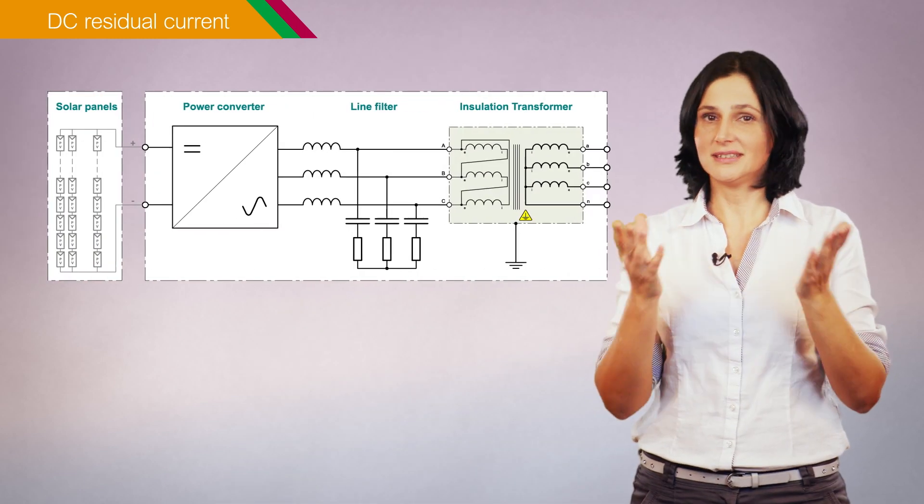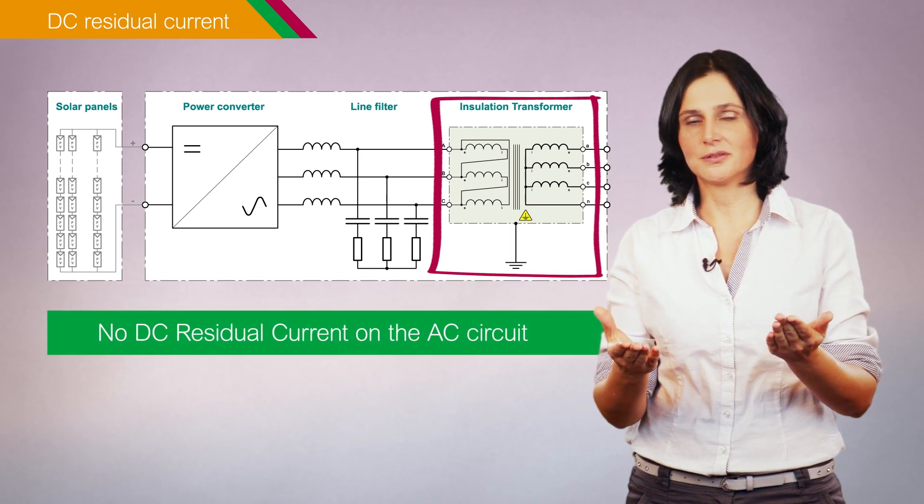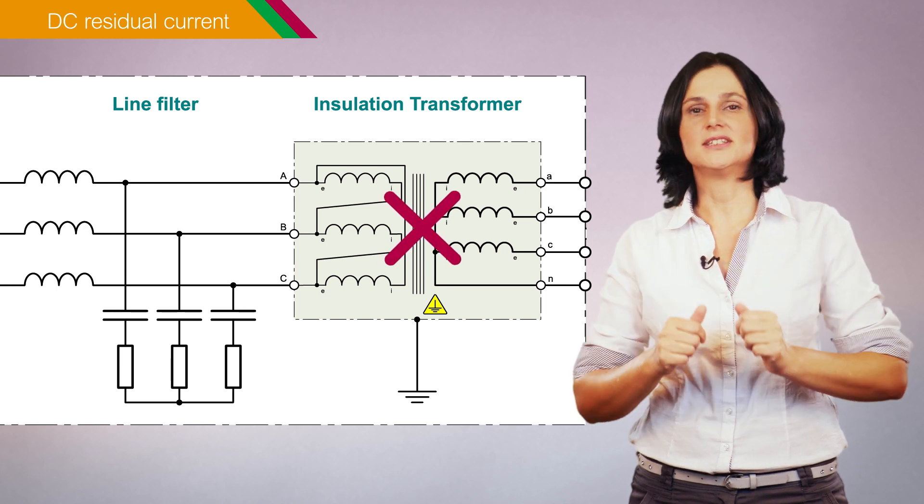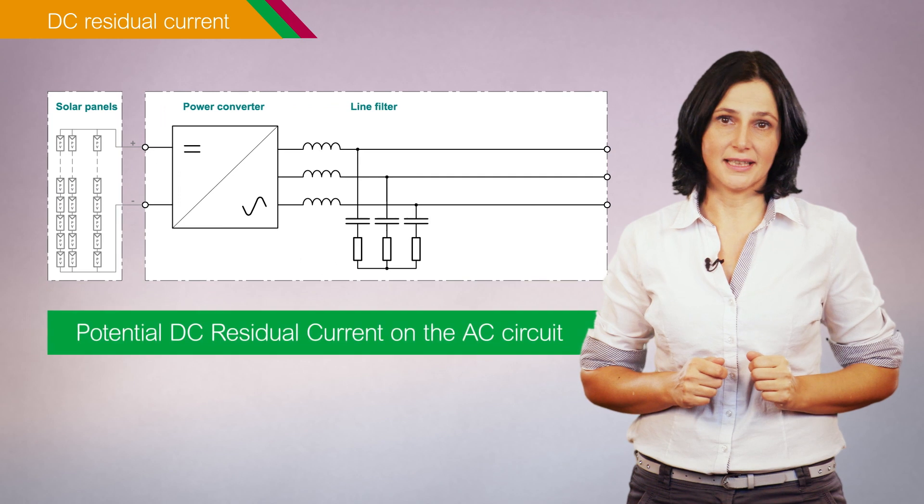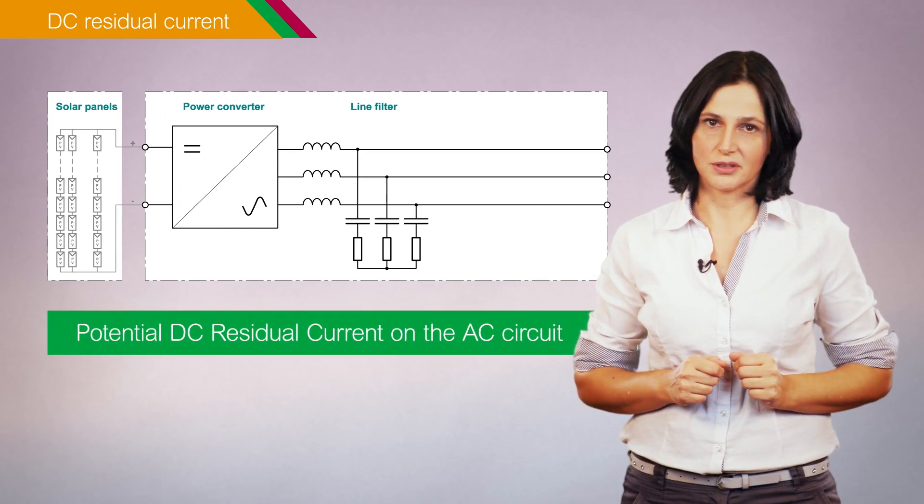Photovoltaic inverters may generate DC residual current in the AC circuit depending on their technology. There are two types of photovoltaic inverters: inverters with insulation transformer which cannot inject DC residual current on the AC side, and inverters without galvanic isolation which inject DC residual current on the AC side unless measures to prevent this are taken by the inverter manufacturer.